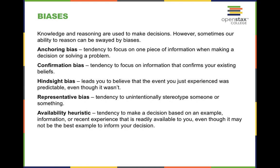The representative bias is our tendency to unintentionally stereotype someone or something. The availability heuristic is the tendency to make a decision based on an example, information, or recent experience that is readily available to you, even though it may not be the best example. Sports analysts fall victim to this frequently — they tend to base opinions on athletes based on what they've done recently rather than their overall career.